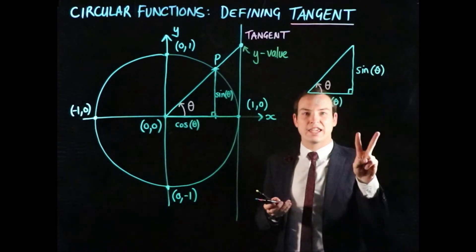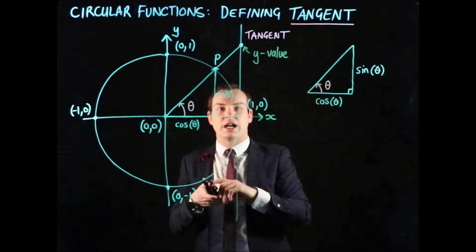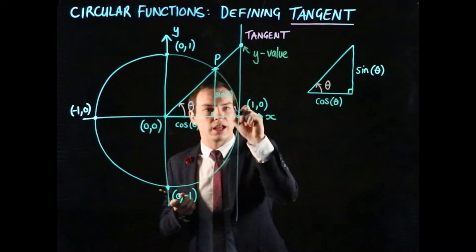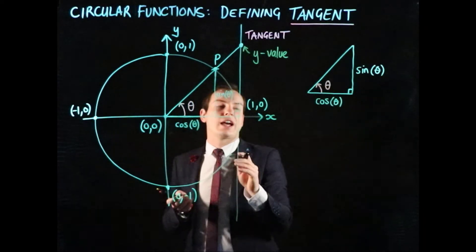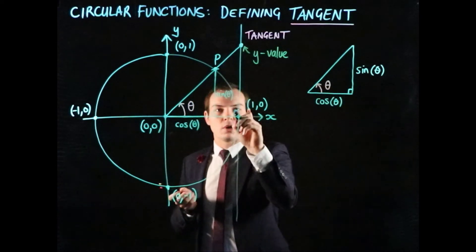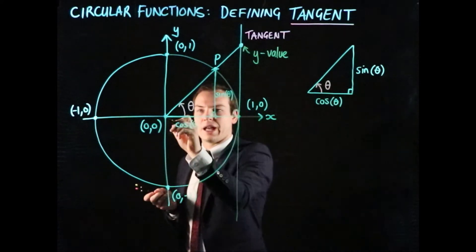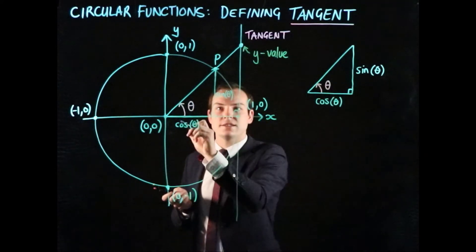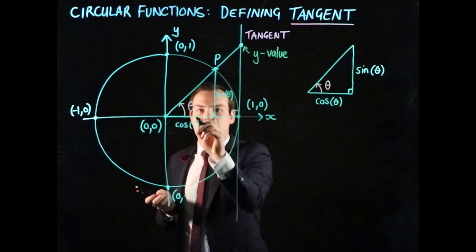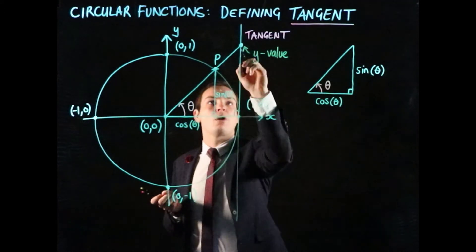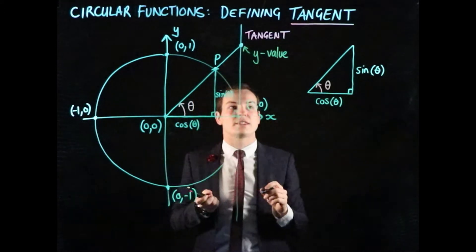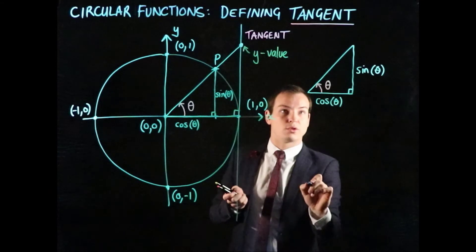There's a second right triangle that has the tangent line as part of it. There's a right angle between the tangent line and the x-axis, and there's that y-length that represents the tan value.